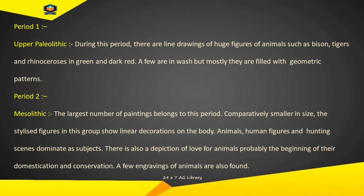Period 1 — Upper Paleolithic: During this period, there are line drawings of huge figures of animals such as bison, tigers and rhinoceroses in green and dark red. A few are in wash but mostly they are filled with geometric patterns. Avdhi ek — Upri Puraapaashaan kaal: Is kaal mein hare aur gahre laal rang mein bison, baagh aur gainde jaise jaanvaron ki vishaal aakritiyaon ke rekha chitra milte hain. Zyaadatar ve geometric pattern se bhare hue hain.